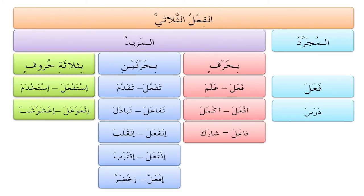تفَعَّلَ, like تقَدَّمَ. The second pattern of المزيد بحرفين is تفاعَلَ, like تبادَلَ — notice the ta' at the beginning and the alif after the fa' are additional. Then انفَعَلَ — like انقَلَبَ — the root is ق-ل-ب, and the basic form قَلَبَ means to turn over; انقَلَبَ means to turn over oneself, so it becomes reflexive.